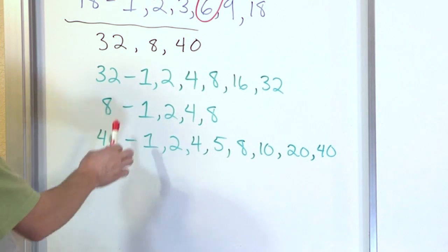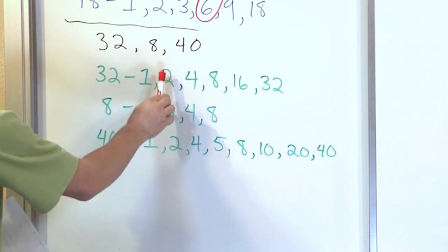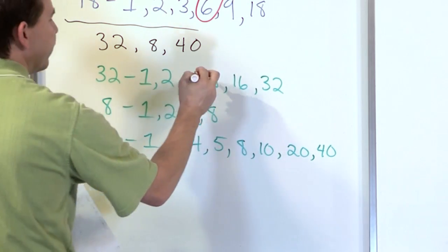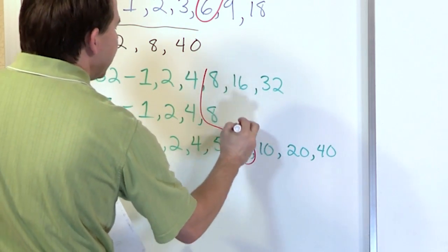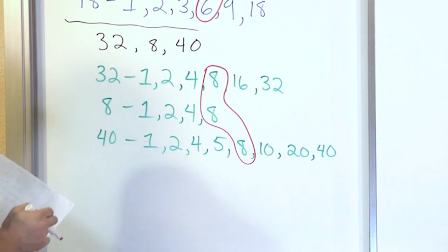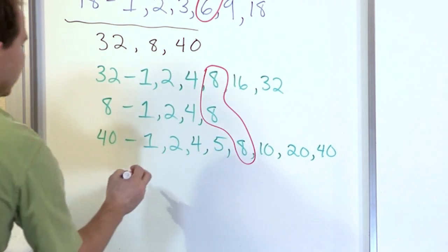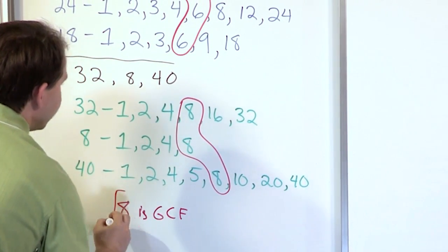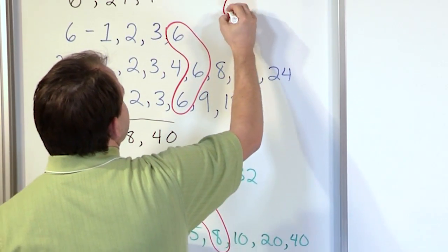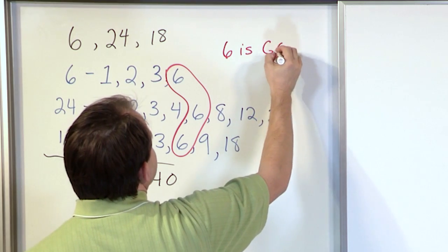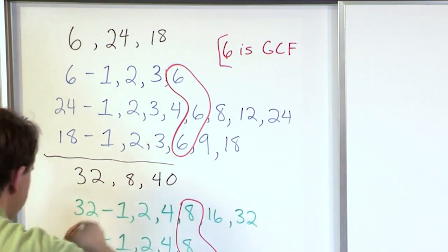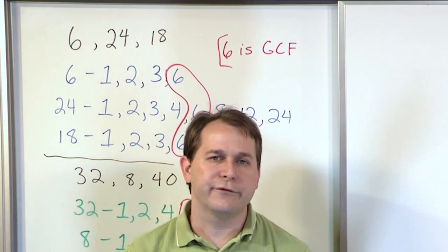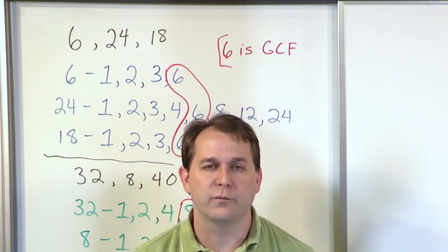Now let's look for the common factors. Number 1 is common, number 2 is common, number 4 is common, but the largest one is the number 8 — that's the one common to all three. So the greatest common factor of 32, 8, and 40 is 8. And from our previous problem, the greatest common factor of 6, 24, and 18 is 6. The process is the same: list the factors for each number, then look for the largest one that's common.